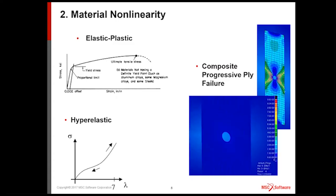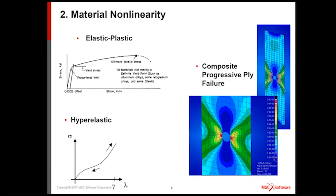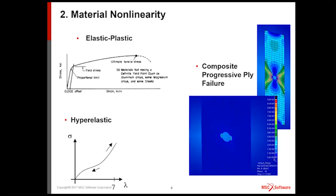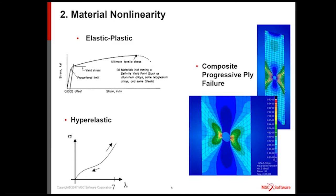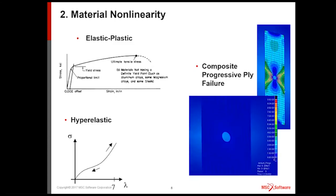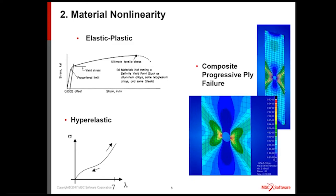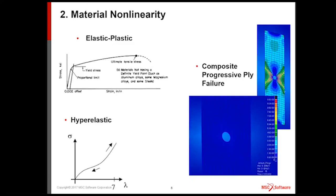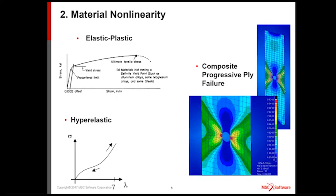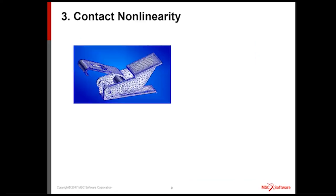And if you do composites, here's ply failure showing this example. This is the open hole tension coupon. I'm just showing the zero-degree ply. You can see here the ply, the fibers are progressively failing and changing load distribution as the failure progresses. So again, another example of material nonlinearity.